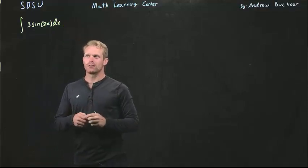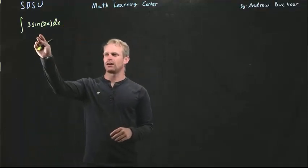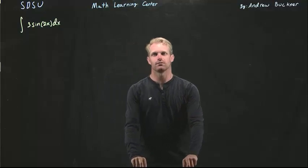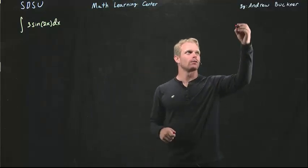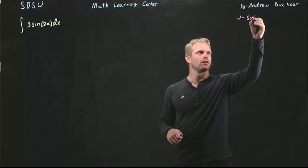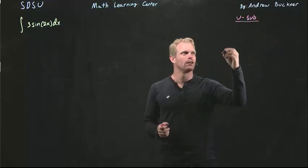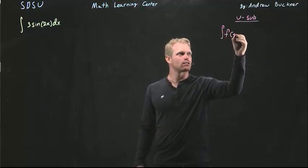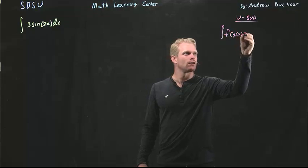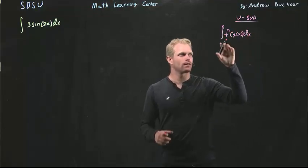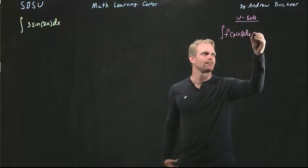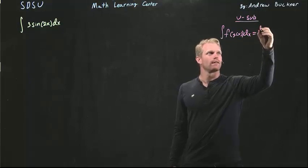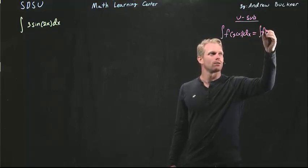When I see a problem like this with a composition of two functions inside, one of the rules I'm going to use is u-substitution. I'm just going to abbreviate it as u-sub. If I have a function inside another function, I'm then going to replace the inner function with a u.